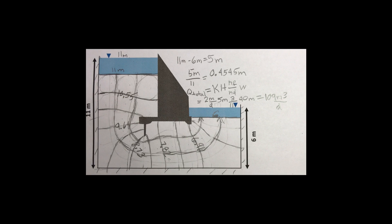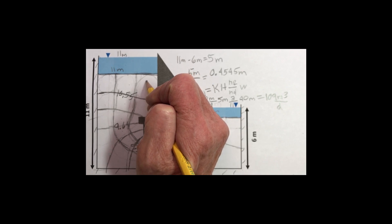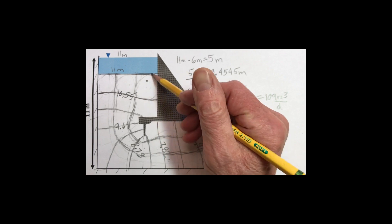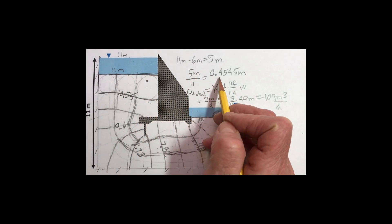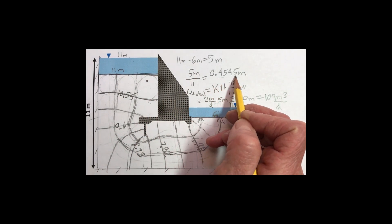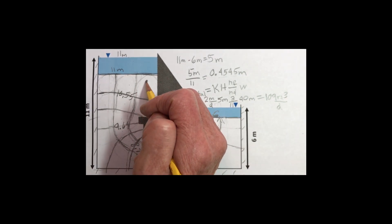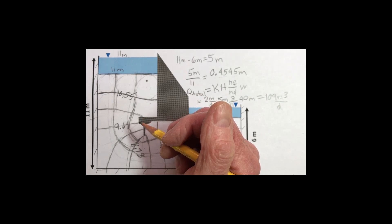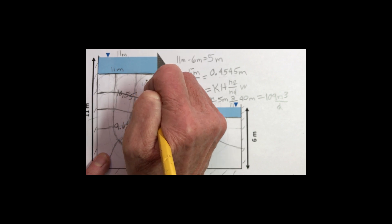If we wanted to know the head at any location in the system, we could pick a point. Let's say we pick this point. We'd estimate that this is about 1 quarter of the way between these two equipotential lines. We know that the total head drop between equipotential lines is 0.4545 meters. Dividing by 4, we'll say that's about 0.11. So the head at this location would be 0.11 meters less than 11 meters. So that would be 10.89.